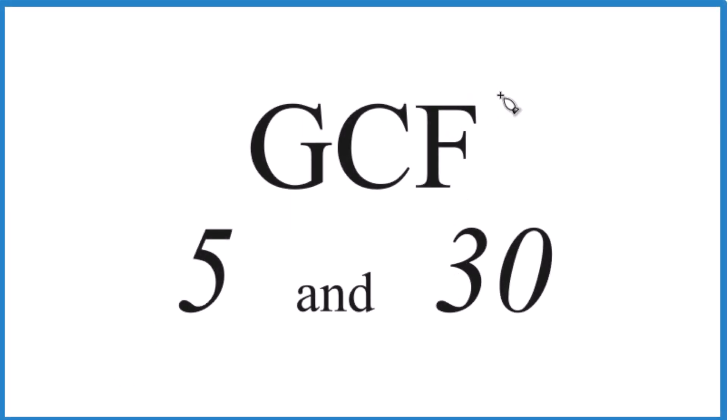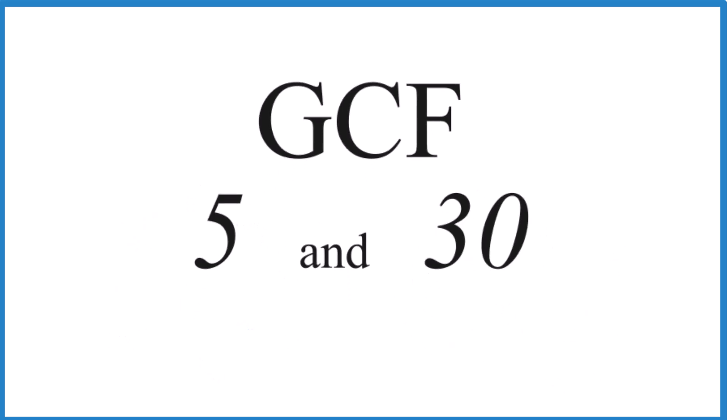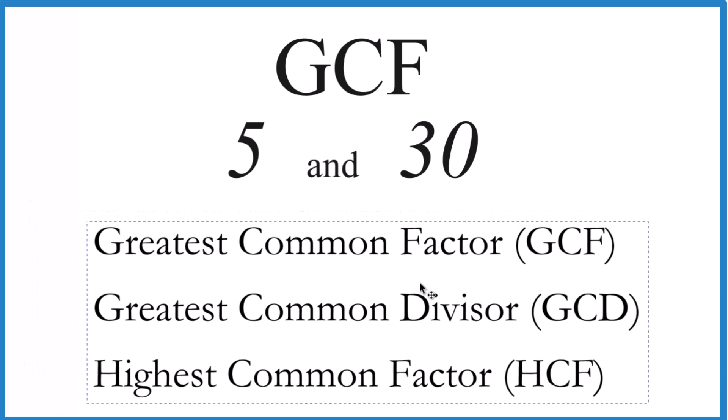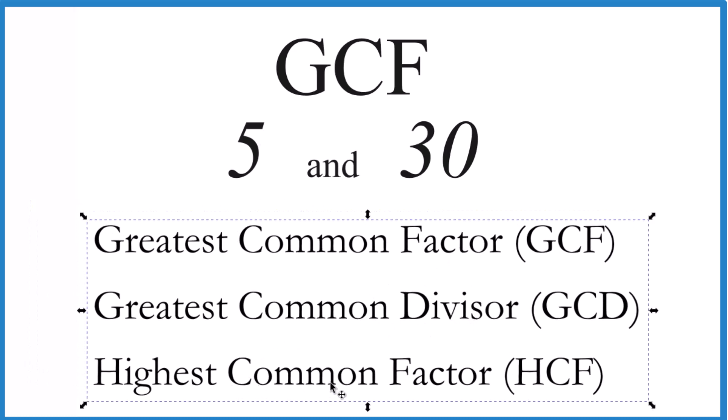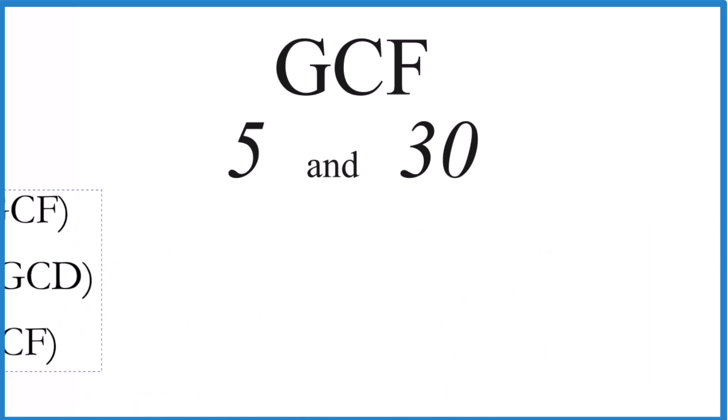If you need to find the greatest common factor for 5 and 30, here's how you do it. The greatest common factor is often called the greatest common divisor or the highest common factor. We're going to go with greatest common factor.